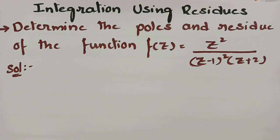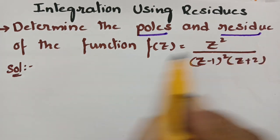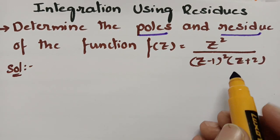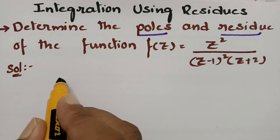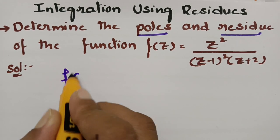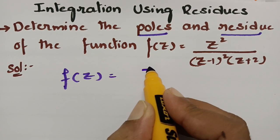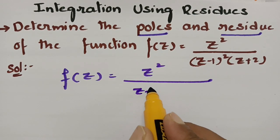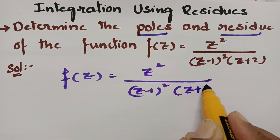Today's video is on integration using residues. We have to determine the poles and the residues of the given function f(z) = z² / [(z−1)²(z+2)].